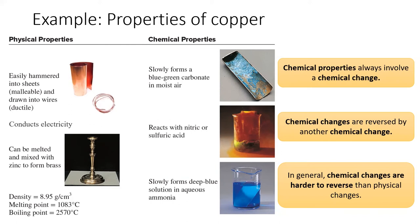Copper can also be mixed with other metals, such as zinc, to form alloys, such as brass. In general, mixing materials is a physical change, since it can be reversed by another physical change. In order to separate the metals of an alloy, we could melt the alloy down and separate each metal by melting point.